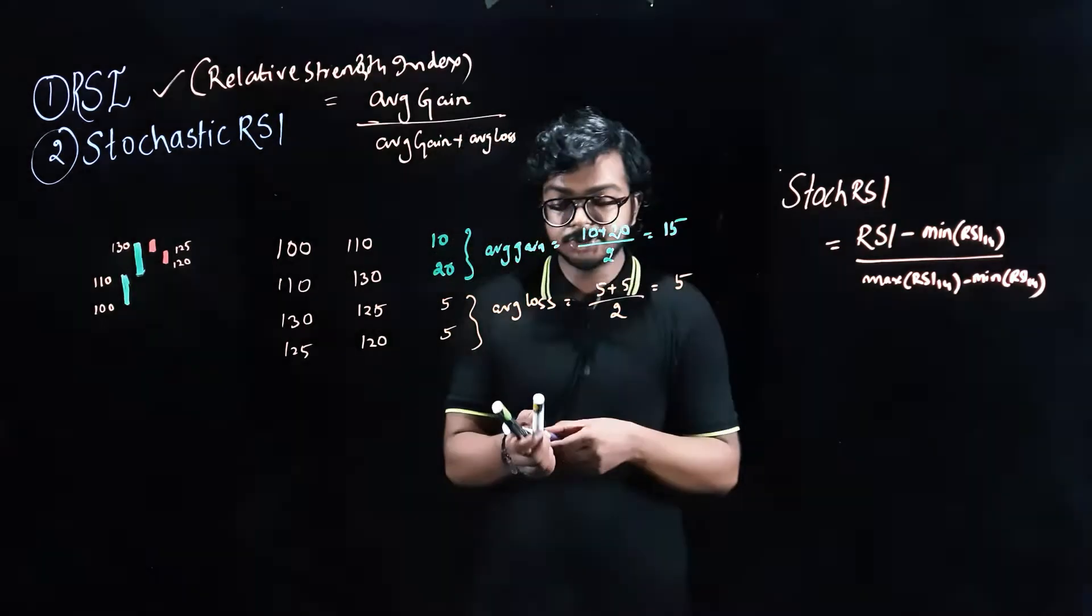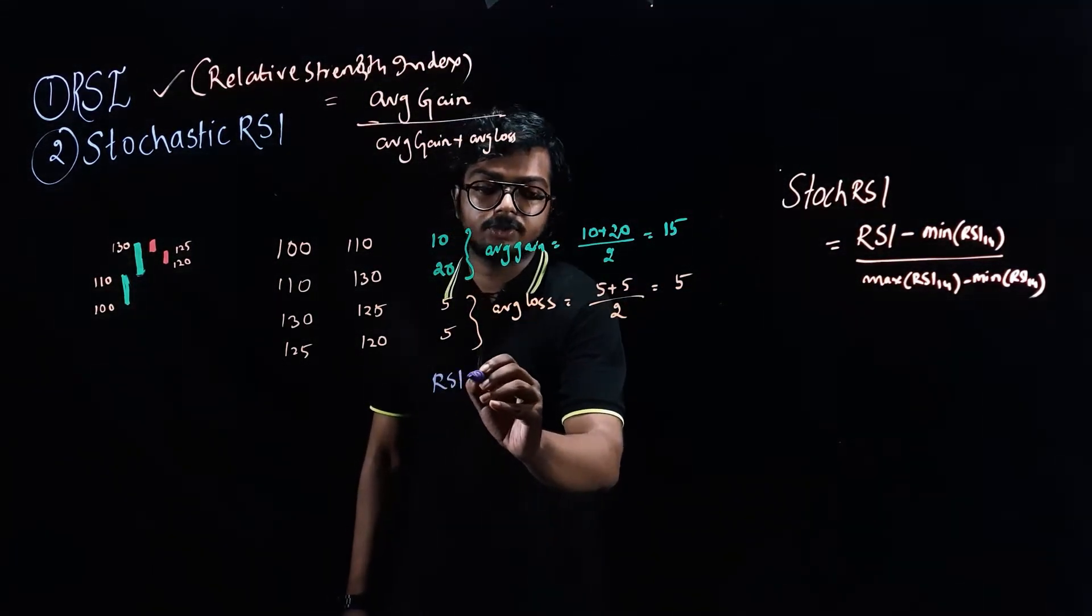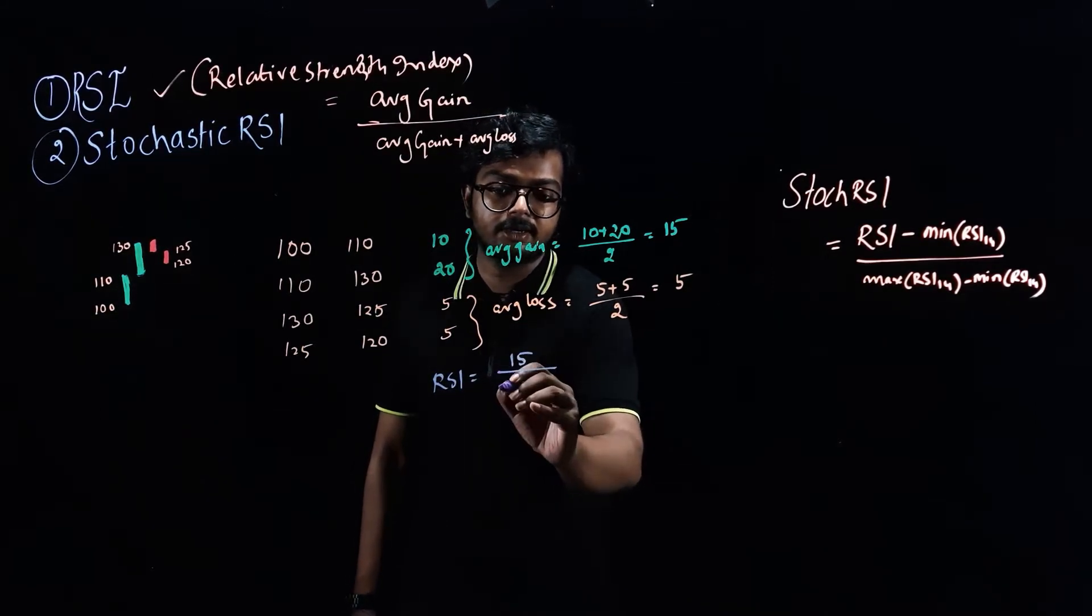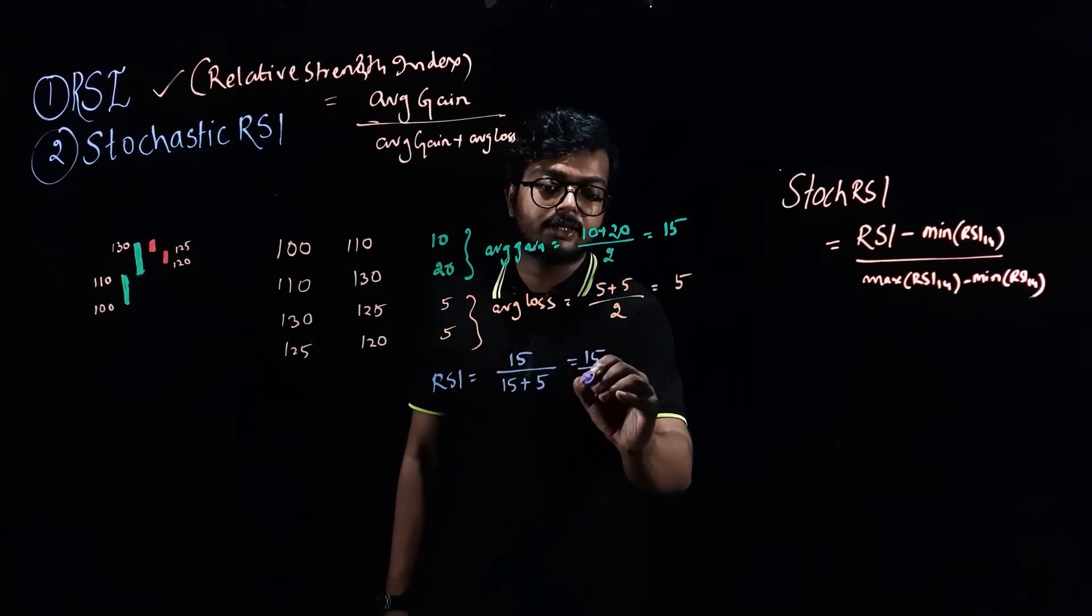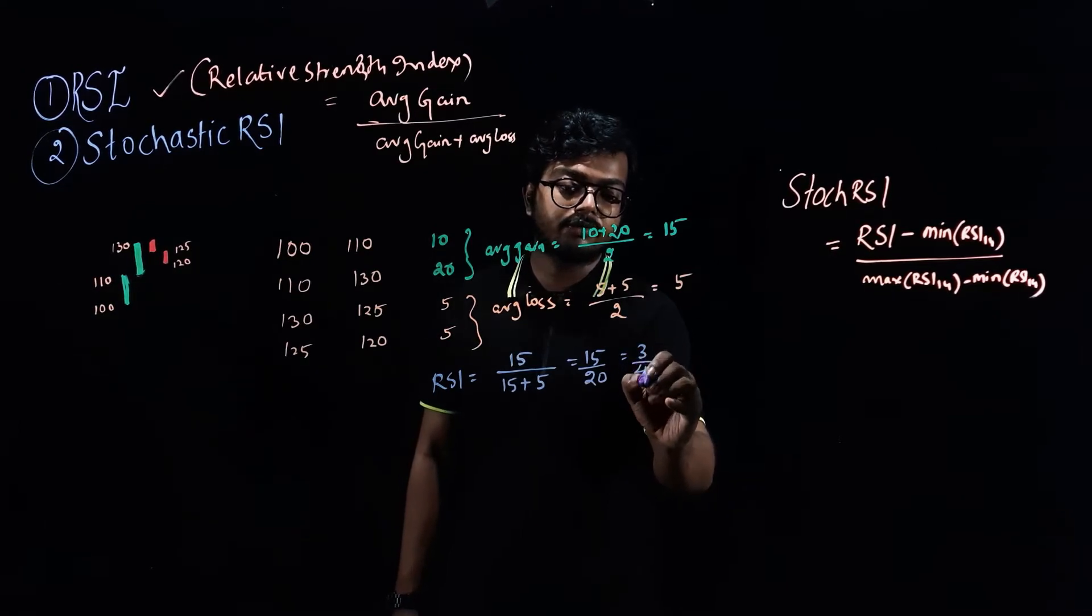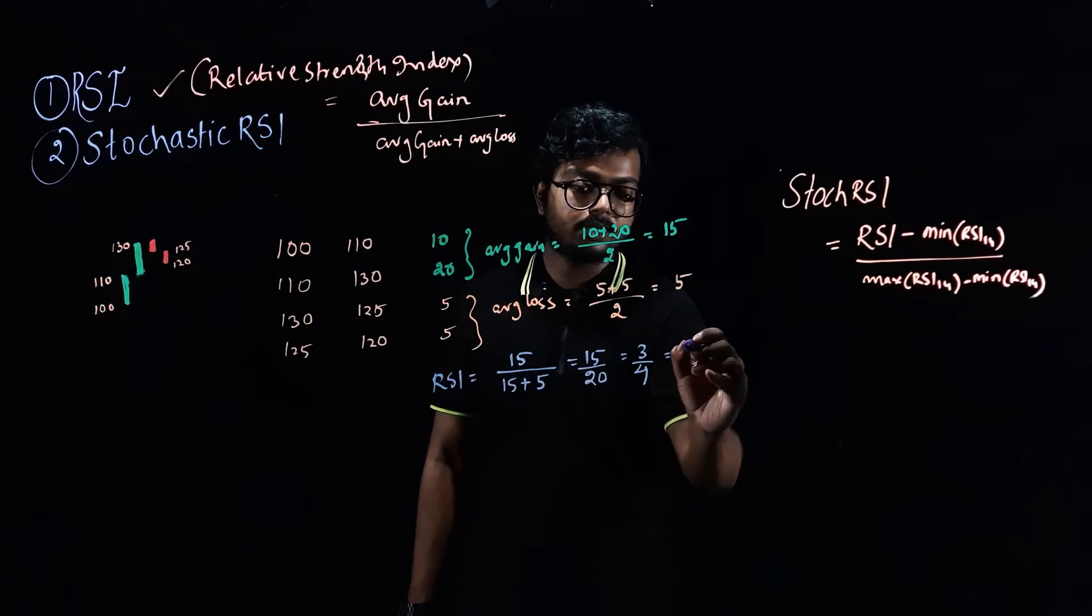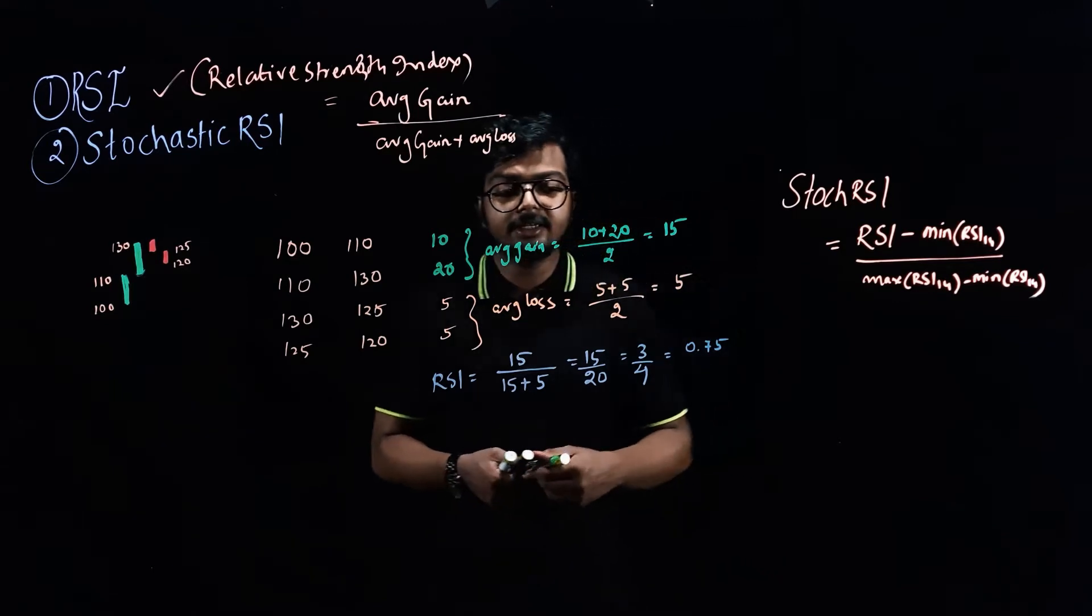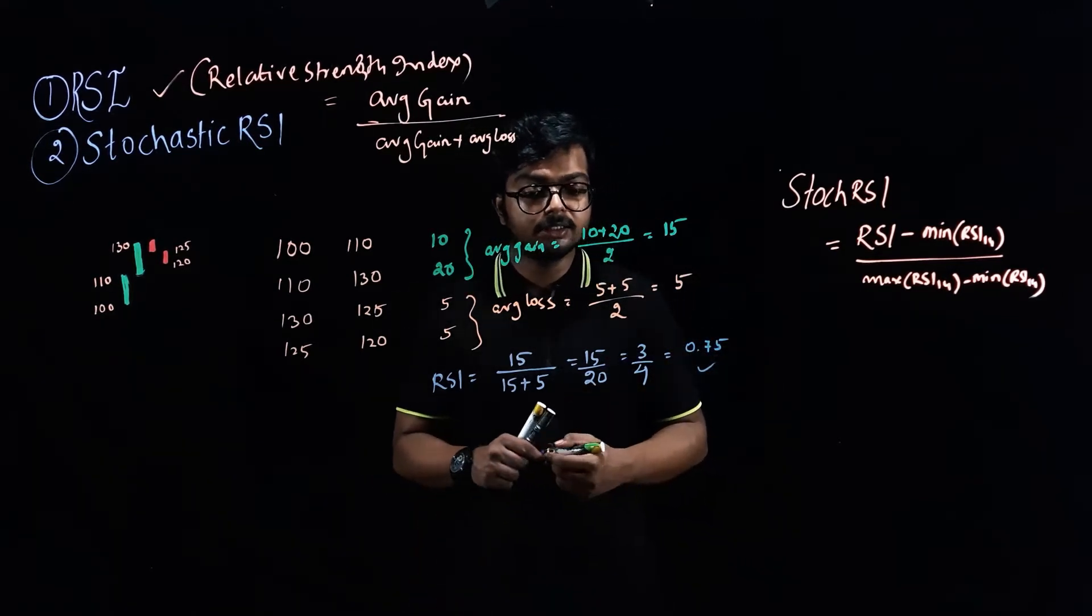Now, if we substitute the value in our RSI formula, so RSI would be average gain that is 15 divided by average gain plus average loss, that is 15 divided by 20. This is nothing but equal to 3 by 4. So RSI is equivalent to 0.75. So you can see that the RSI value comes out to be 0.75.